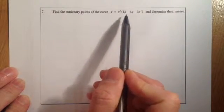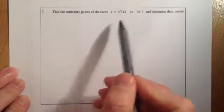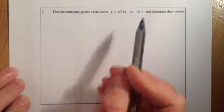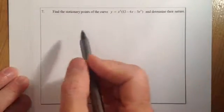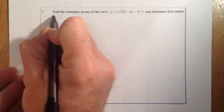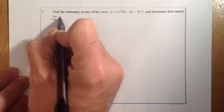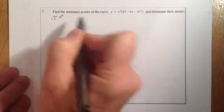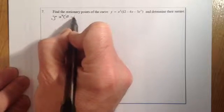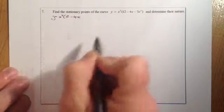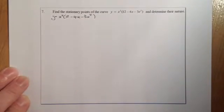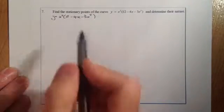Find the stationary points on the curve. First, I'm going to have to differentiate this curve, but before I do that I'm going to have to prepare it for differentiation. So the curve is y equals x squared times 12 minus 4x minus 3x squared.